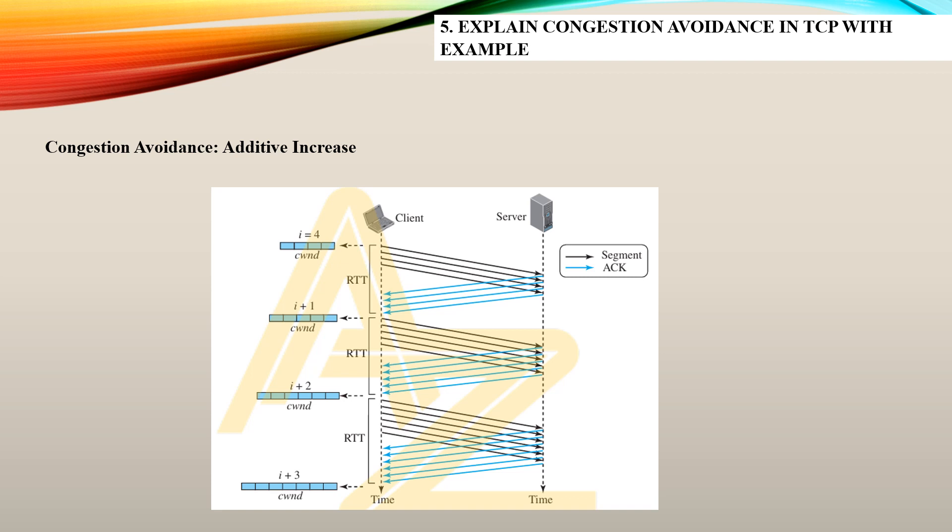Exponential increase works differently: if i equals 4, then the data sent grows as 4 to the power of 1, 4 to the power of 2, 4 to the power of 3, and so on — exponentially increasing the bytes of data from client to server. Using this diagram, you will explain both additive increase and exponential increase for congestion avoidance.